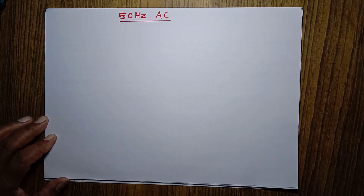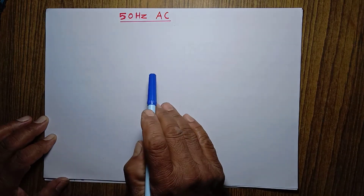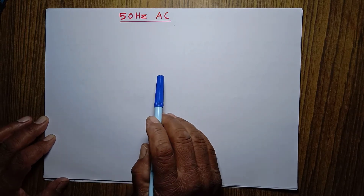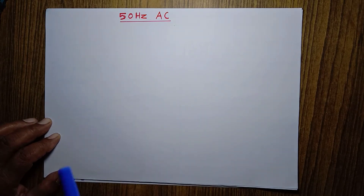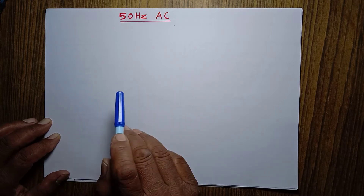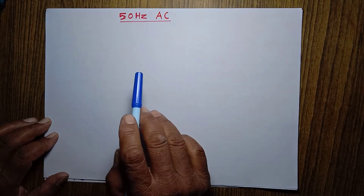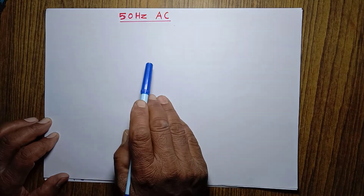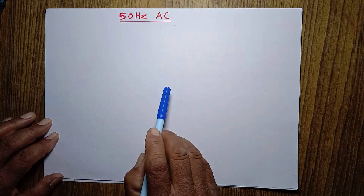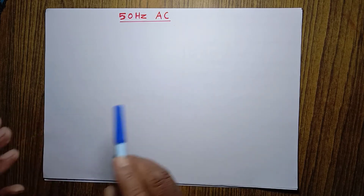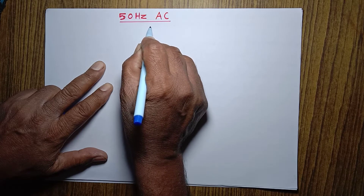Today I want to tell you about 50 hertz frequency of AC and what it means. All of us know that the alternating current supplied to household circuits is of 50 hertz frequency, but we are a little confused about the direction of change of alternating current. Many people say that 50 hertz frequency means 50 times per second the direction of current changes in the household circuit — but this is incorrect.